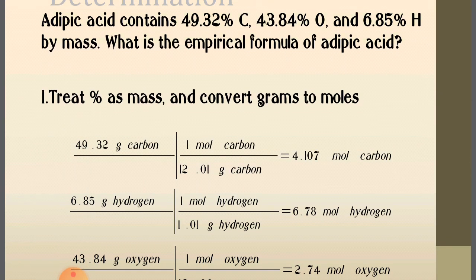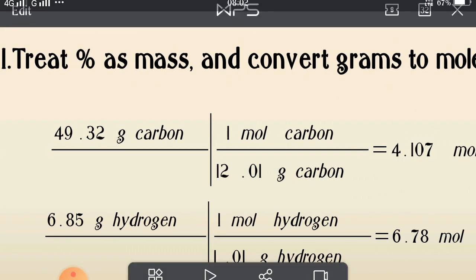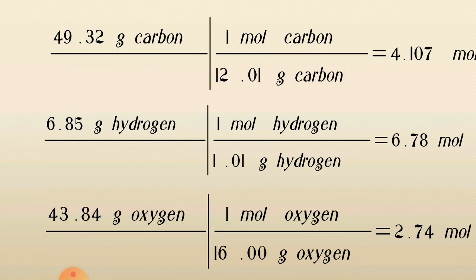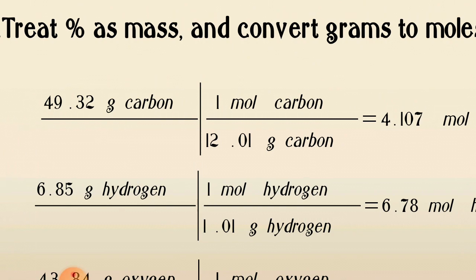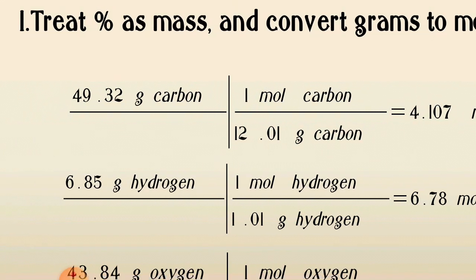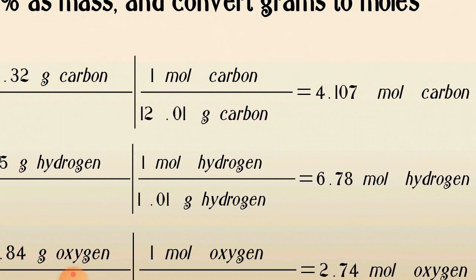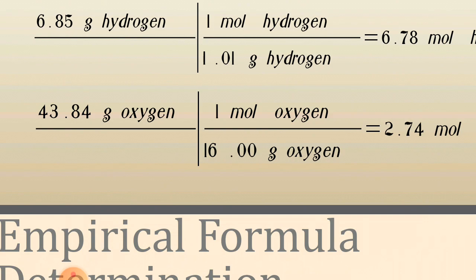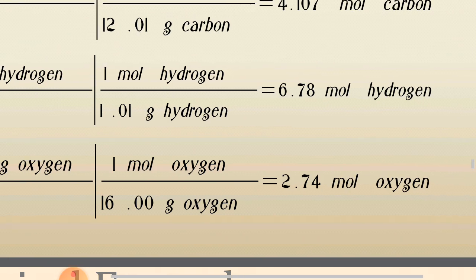Let's work an example: adipic acid contains 49.32% carbon, 43.84% oxygen, and 6.85% hydrogen by mass. So in 100 g: C = 49.32 g, H = 6.85 g, O = 43.84 g. To find moles, divide by atomic mass: moles of C = 49.32/12 = 4.11, moles of H = 6.85/1 = 6.85, moles of O = 43.84/16 = 2.74.